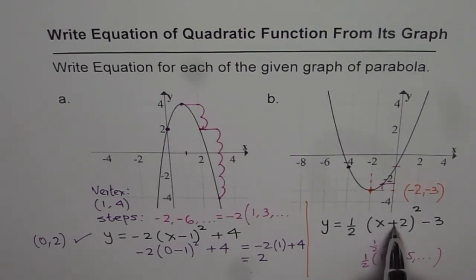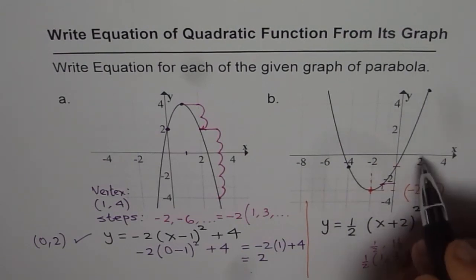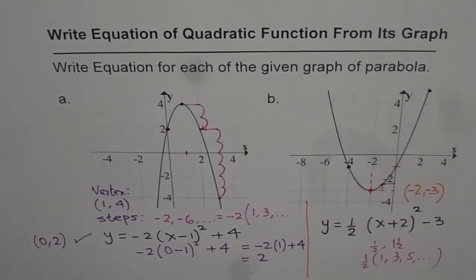Minus 4 plus 2 is minus 2, minus 2 square is 4, 4 divided by 2 is 2, and 2 minus 3 is minus 1. So that point satisfies our equation, and therefore, we have just the right equation for our graph. So you can also check with this point, which is (2, 5).